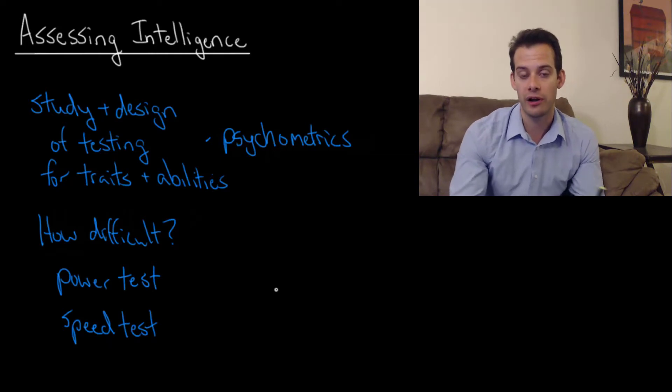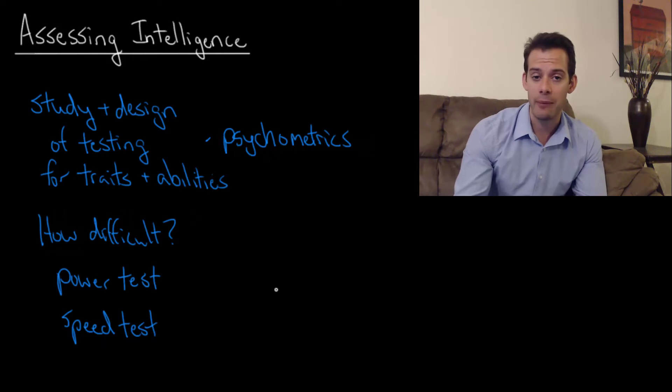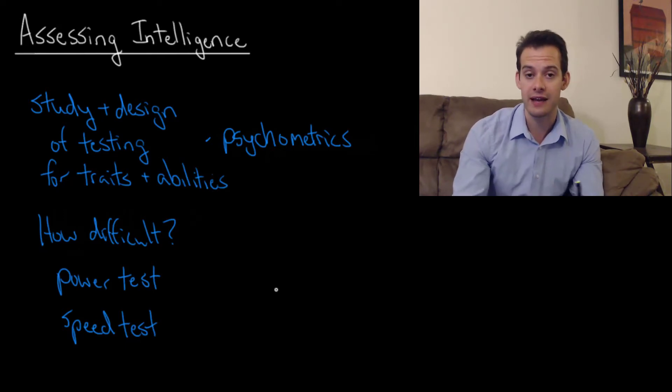So we might say okay these questions are relatively easy. Most people can answer them. But we're not concerned with whether or not you can answer the question. We want to see how quickly can you answer. So we might say how many of these easy items can a person come up with the correct answers to in just two minutes. And then what we'll find is that even though everybody is able to answer the questions some people might be able to answer them twice as quickly. They complete twice as many items as someone else. And that might tell us something about their intelligence. So that would be a speed test.